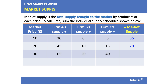As price goes up we expect market supply to increase. At £30, total market supply goes up to 125, and at £40 all three firms in the market can expand their production and total supply goes up to 200. So as the market price goes up, market supply expands because each firm is expanding its own production.